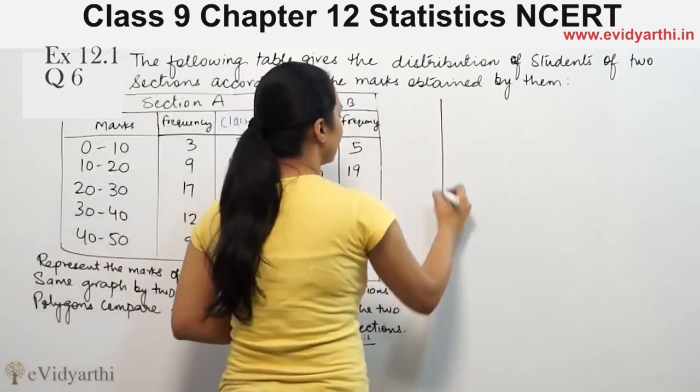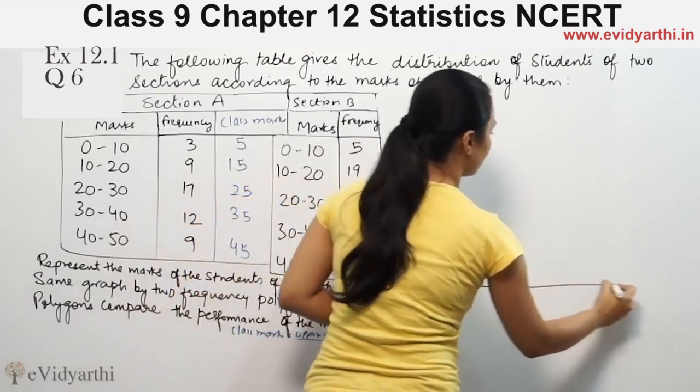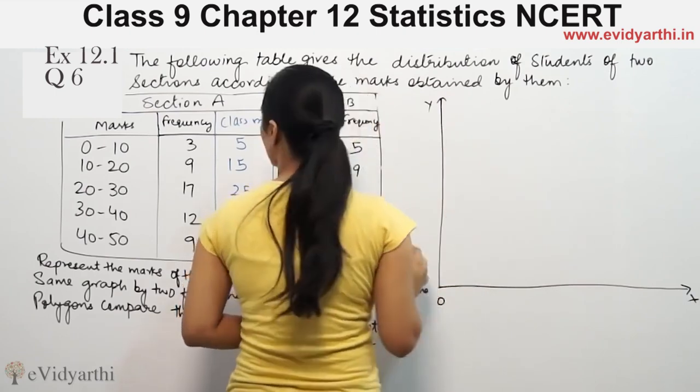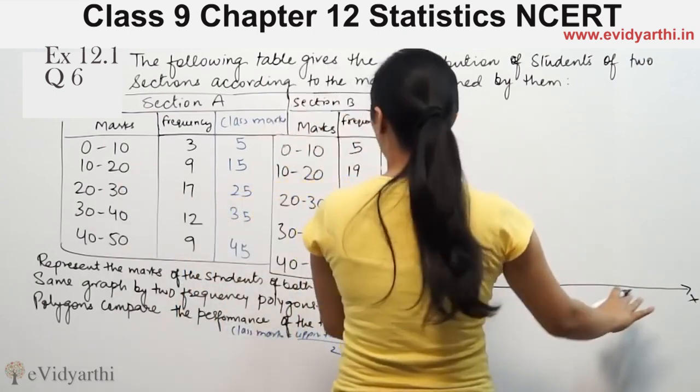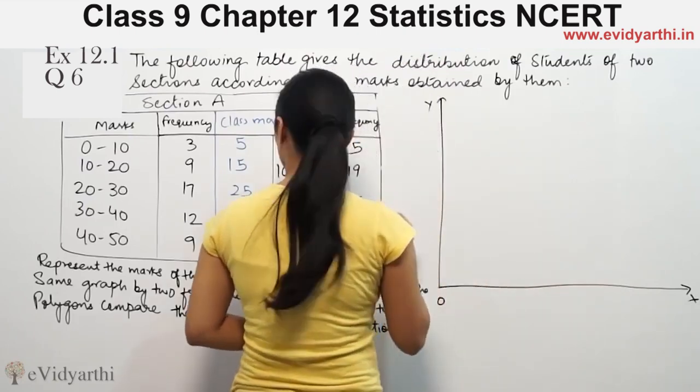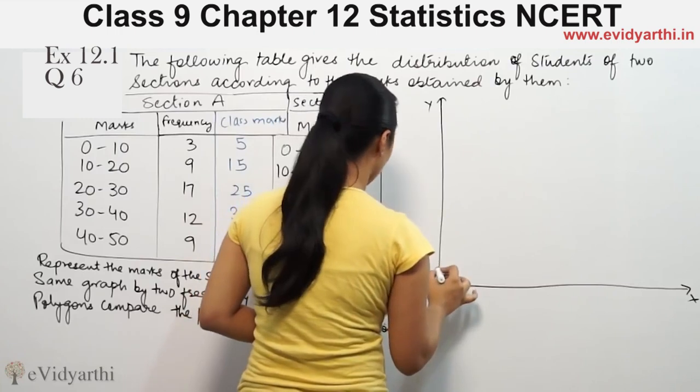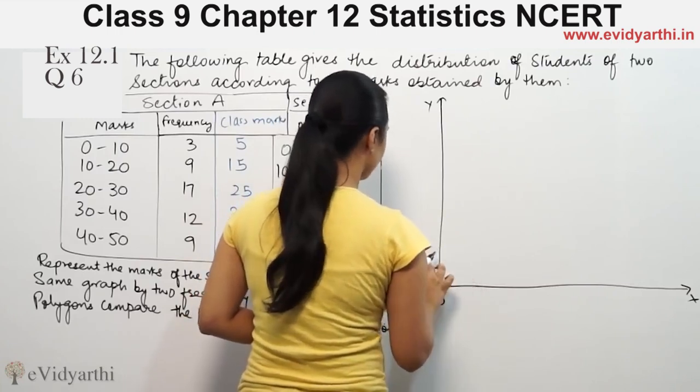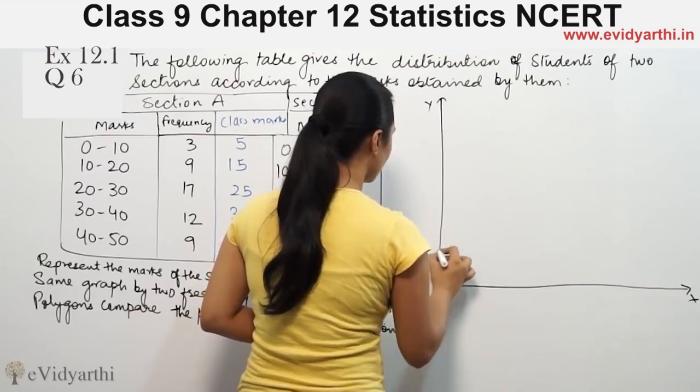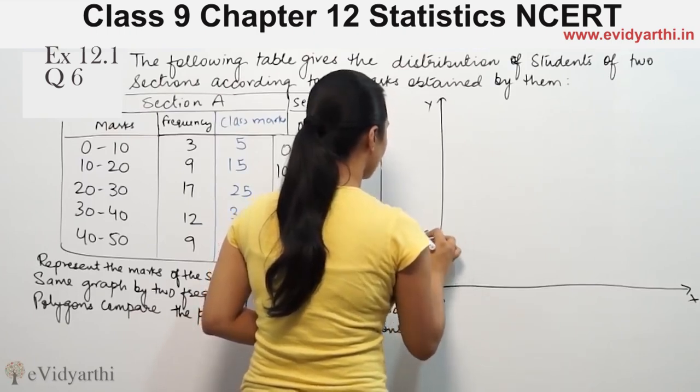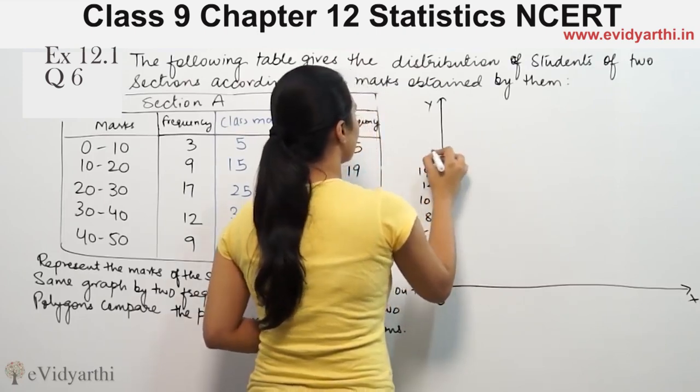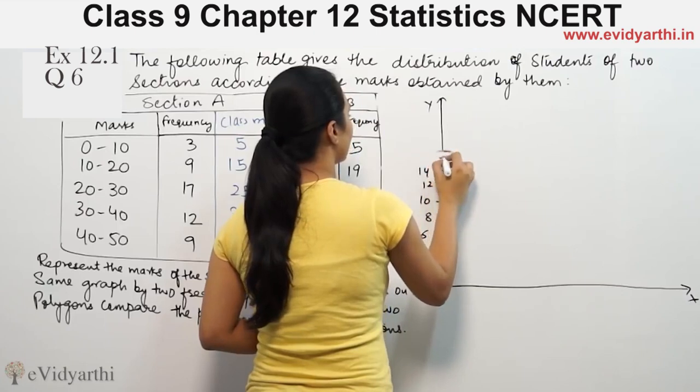Now we set up the axes. This is the y-axis starting at 0. The frequency values go up to a maximum of 20, so let's mark 2, 4, 6, 8, 10, 12, 14, 16.